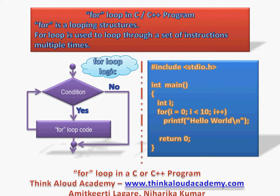For loop is actually a looping structure in C or C++. It is used to loop through a set of instructions multiple times. For example, you may have an instruction to open a file and read each line of the file till you reach the end of the file. To do such things, you will have to repeatedly read each line from the file, and such things can be done using a for loop.